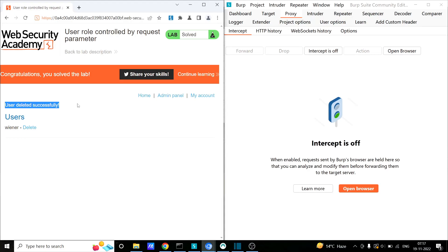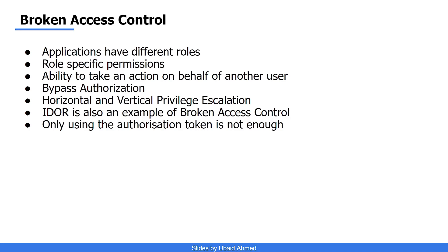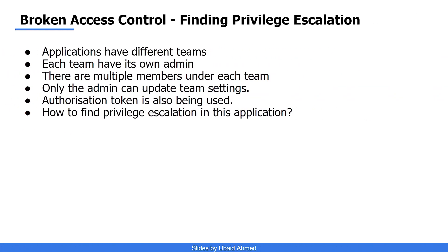We can protect against such vulnerabilities by using an authorization token. However, simply using the authorization token is not enough — let's find out why with a real-world example. The application I tested had multiple teams; each team had their own admin and members. Data of a particular team was only accessible by its members, and any team details could only be managed by the respective admin. To restrict members from updating team details, they were using an authorization token — but just using it was not enough.